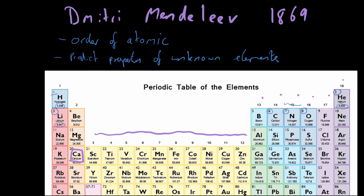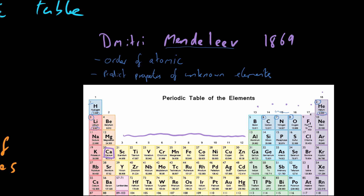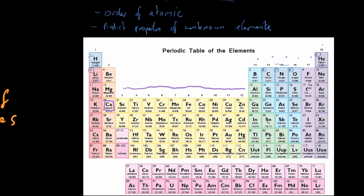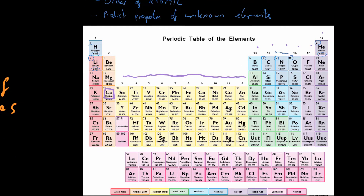That is why Mendeleev is known as the father of the modern periodic table. Since Mendeleev's time, we have included many more elements that he did not predict — especially those at the bottom of the table — but Mendeleev really did give rise to the modern periodic table as we know it today.